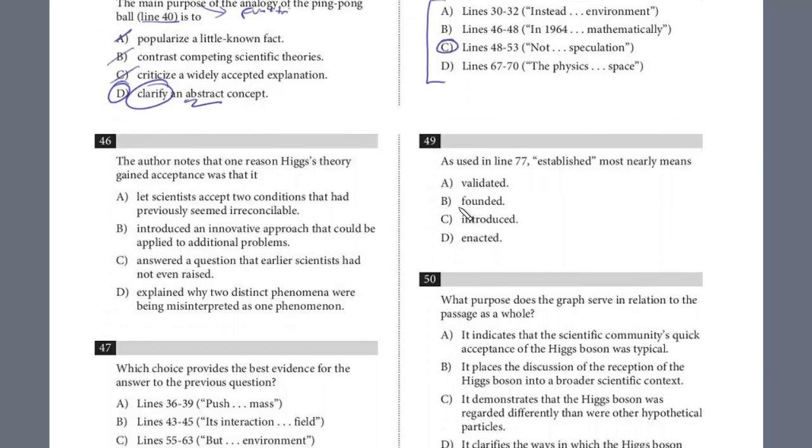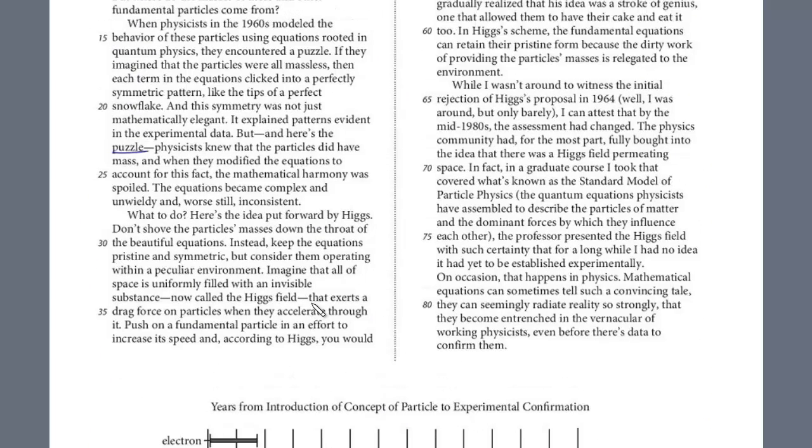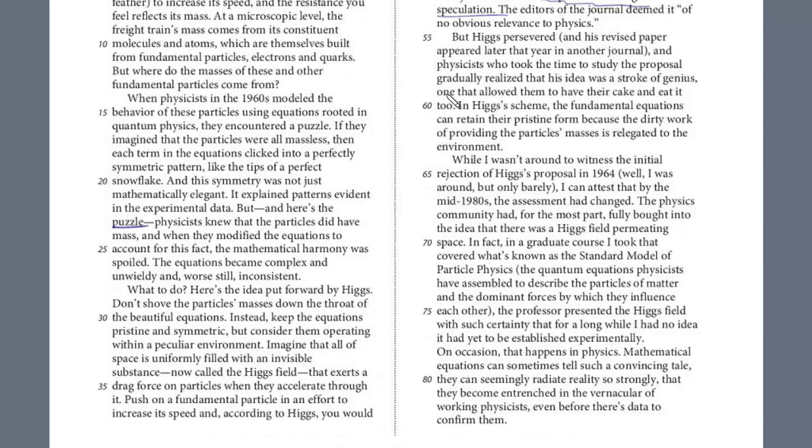And let's do two more and we'll stop this video. So 46 and 47, we noticed this is another, it's two in a row, another two-part question. So 46, the author notes that one reason Higgs's theory gained acceptance. So now we're shifting to when it gained. We know that's toward the end of the passage was what? And we want to look for the evidence. Okay, so again, you really want to try these on your own. But we know it's between 36 and 39. It's probably not going to be 36 because the last question we answered, the evidence was in 48. And that was talking about rejecting it. We know the acceptance came later than that. So it's probably going to be one of these last two, right? It's going to be toward the end. So we're going to look around 55 to 83. And we're looking for an evidence as to why it was accepted.